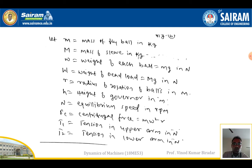Fc = centrifugal force = mω²r, where m is the mass of the ball, ω is the angular speed, and r is the radius of rotation. T1 is the tension in the upper arm in Newtons, and T2 is the tension in the lower arm. These are the notations used throughout the Porter Governor derivation.